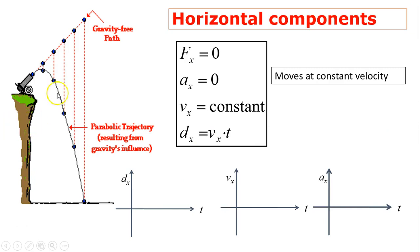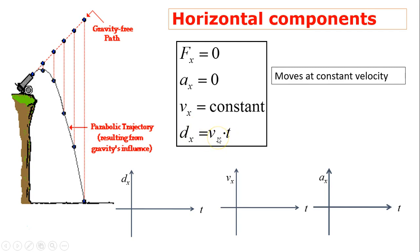Horizontal components: in the horizontal direction there is no force; the motion is due to inertia. There is no acceleration, so velocity in the horizontal direction is constant. That gives us only one equation. When applying equations, we must separate horizontal and vertical — use horizontal components only in horizontal equations and vertical components only in vertical equations.